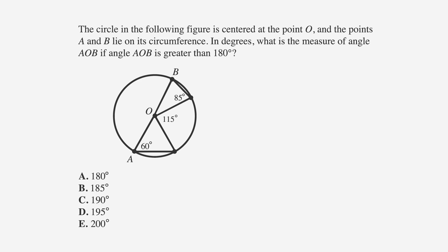Let's take a look at an ACT question that involves knowing that isosceles triangles are often found in circles. The circle in the following figure is centered at point O, and points A and B lie on its circumference.